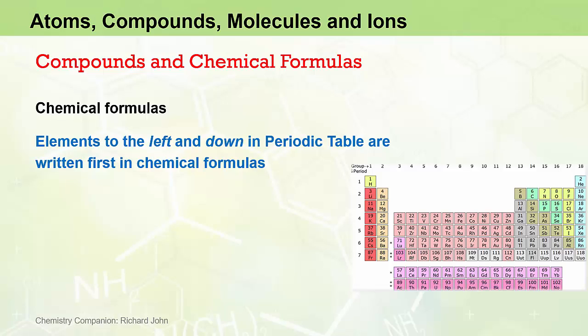When writing chemical formulas, a useful general rule of thumb is that elements to the left and down in the periodic table tend to be written first. So for ionic compounds, this simply means placing the metal first since all metals lie to the left or down from the non-metals. The metal will also be the positively charged cation, and so the cations are always written first for ionic compounds.